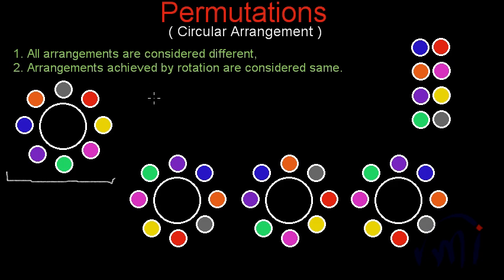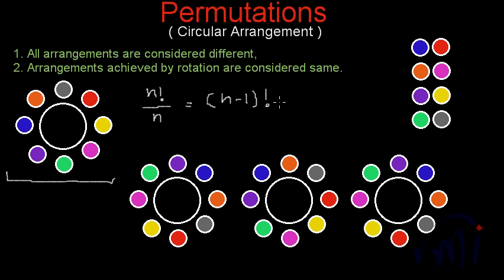The number of arrangements possible for n number of things is n factorial. But we can achieve n possible arrangements by rotating any one arrangement, so if we divide n factorial by n, we discount the arrangements achieved by rotation. This gives us n minus 1 factorial. So if you have n things arranged in a circle and rotated arrangements are not counted separately, the total permutations possible is n minus 1 factorial.